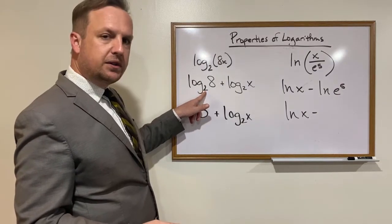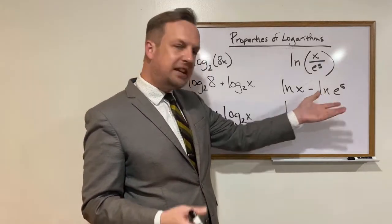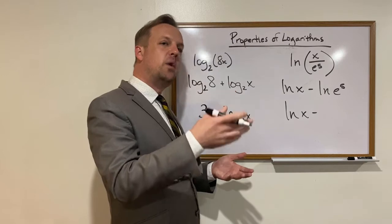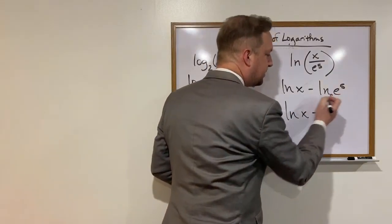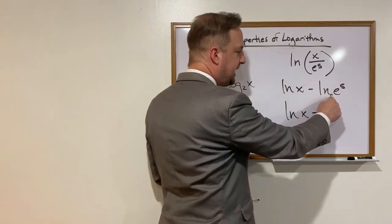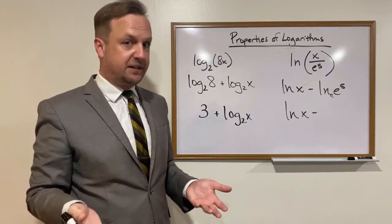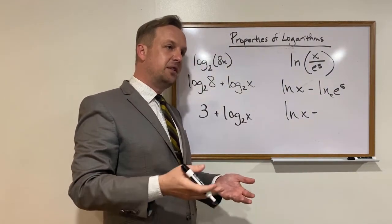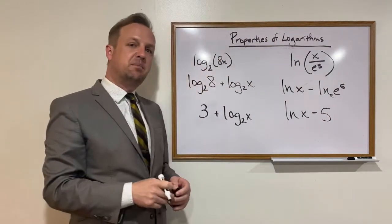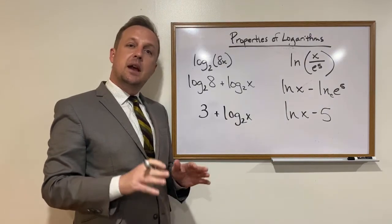Don't get confused here. Remember, in most logs, we're given a base, unless we're talking about our common log where our base is 10. Here, there doesn't seem to be one. But don't forget, natural log just means a log with a base of e. So it's redundant to write it here. So this natural log basically means e raised to what power gives us e to the 5th. Well, that's pretty simple. If you want to raise e to a power to make it e to the 5th, you raise it to the 5th power. So we simplify this one by saying the natural log of x minus 5.